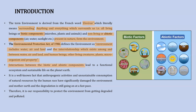Interactions between the biotic and abiotic components lead to a functional ecosystem and sustainable life on planet Earth. Biotic and abiotic components individually will never lead to a functional ecosystem — it is their interaction that does. For example, if due to the presence of sunlight some molecules in air are reacting and forming oxygen, this is how a functional life on Earth is maintained.